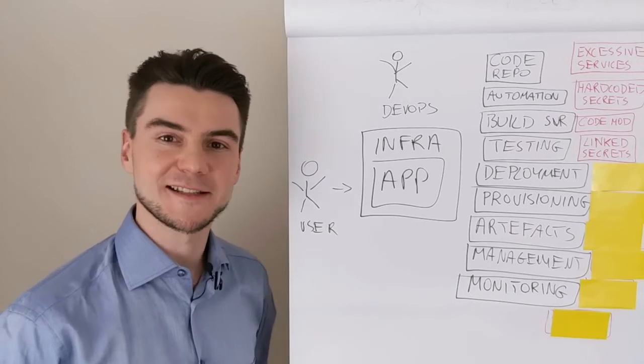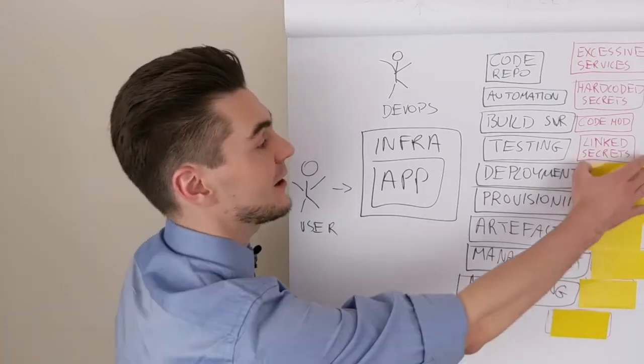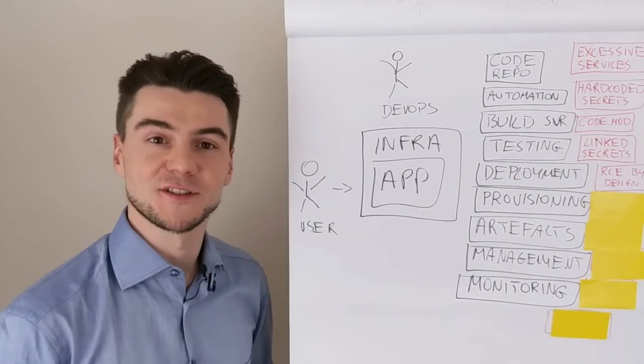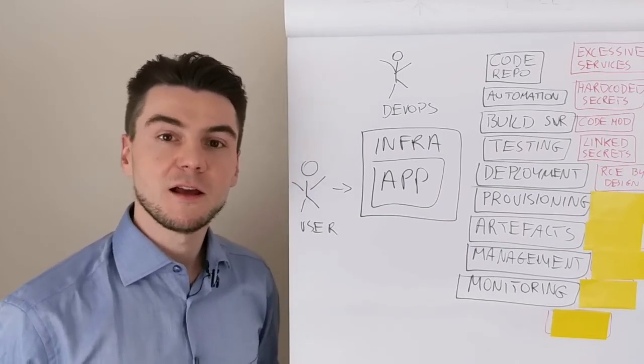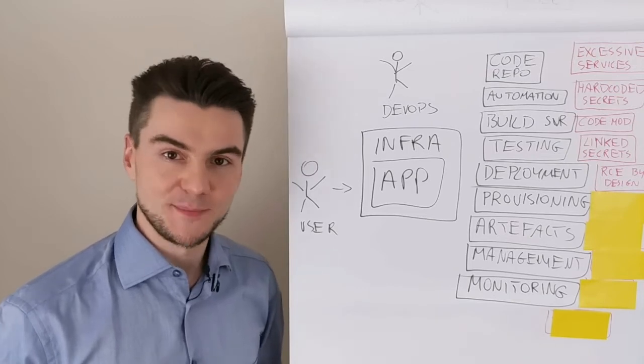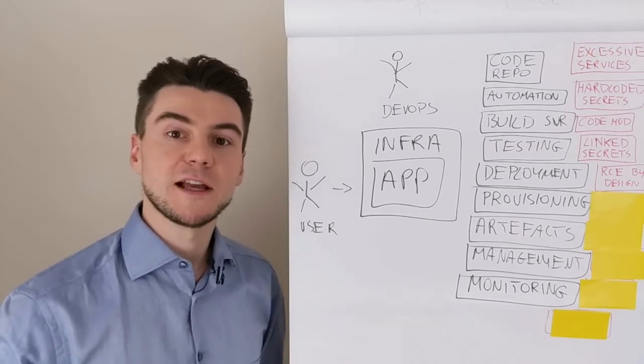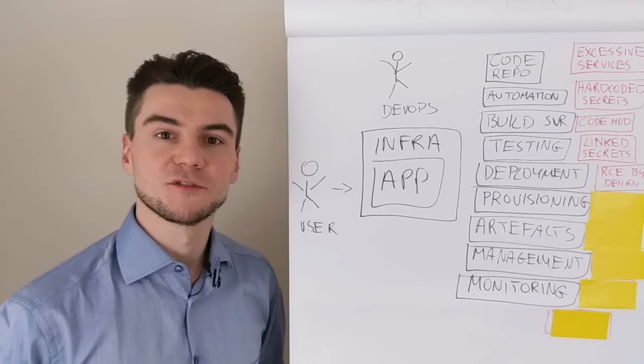Remote code execution by design allowed for low privileged users. Custom interfaces such as Jenkins or Apache Foundry allow to write custom Groovy scripts and those allow to execute arbitrary commands on the server.